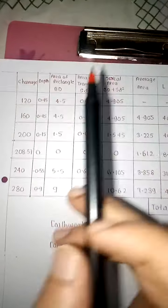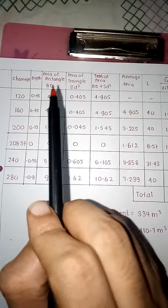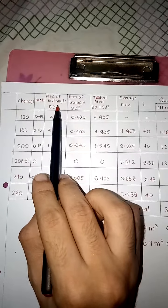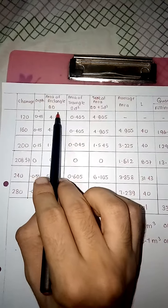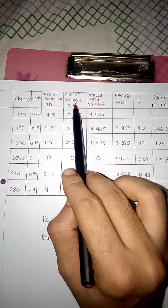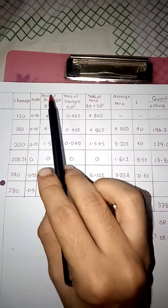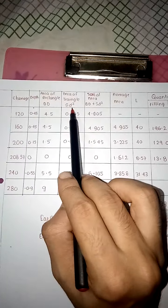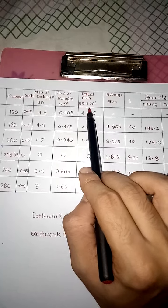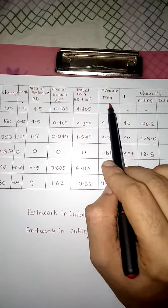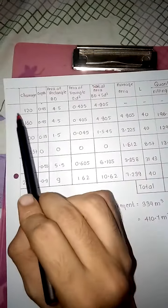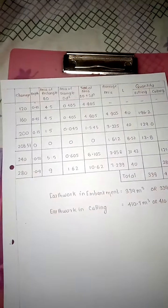Now make table for mean area method. Columns: chainage, depth, area of rectangle B×D, area of triangle S×D², total area (BD + SD²), average area, length, quantity, filling and cutting. 120, 160, 200, we calculated depth,